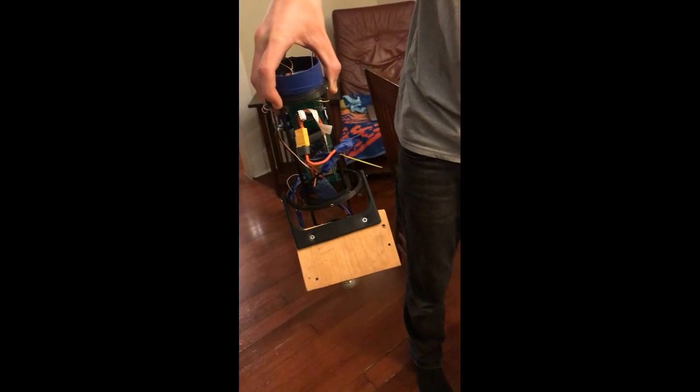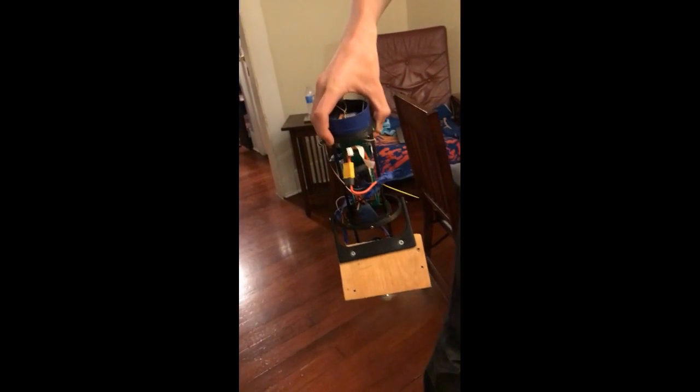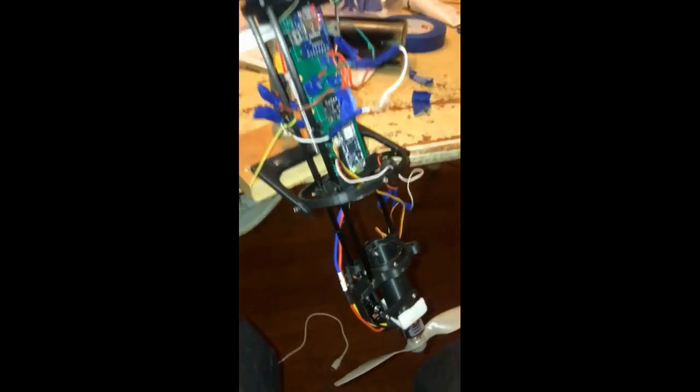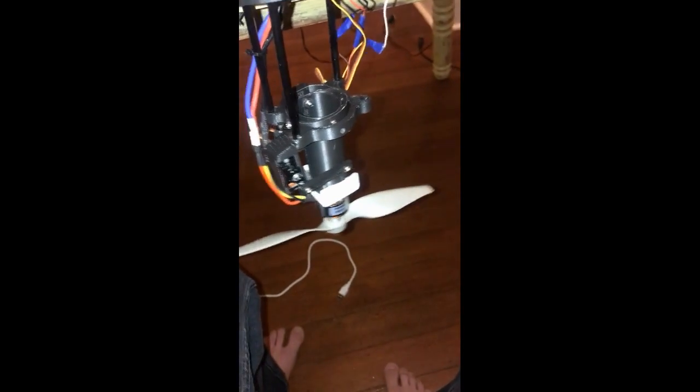The next thing I did was clamp the two-axis gimbal to my table. Then I manually tilted the rocket without spinning up the brushless motor, just to see if the TVC mount moves in the direction that I'm expecting. And after that, it was time to start spinning up the motor and running actual tests.